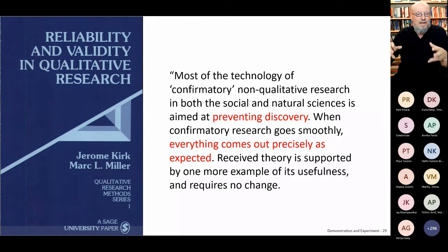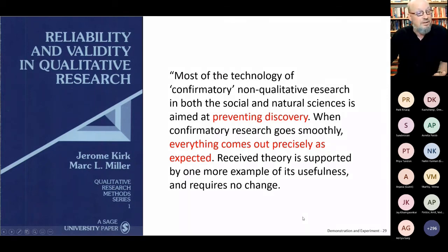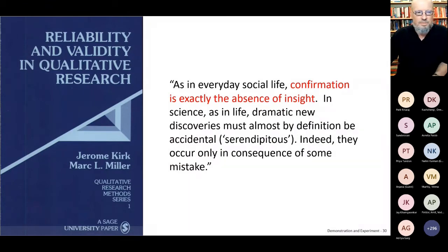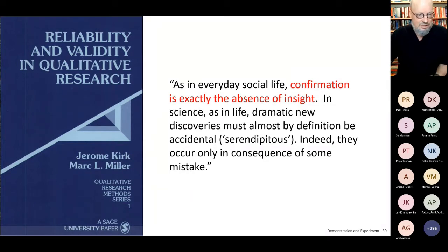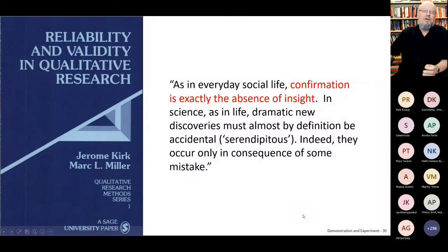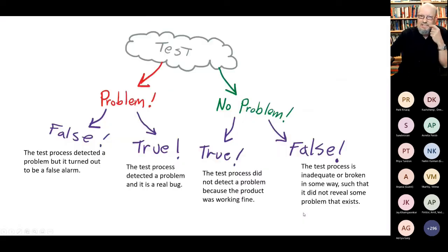It's bad news if a theory has to be overturned. So when confirmatory demonstrations go smoothly and received theory is supported by one more example, it requires no change. But Kirk and Miller drop the bomb: as in everyday social life, confirmation is exactly the absence of insight. Testing is not about showing that the product can work — testing is about discovery, about investigation, about learning where the product doesn't work or where there might be risk we haven't noticed. And in science, as in life and in testing, Kirk and Miller say dramatic new discoveries must almost by definition be accidental — serendipitous — occurring only as a consequence of some mistake about the ideas we had about the product.